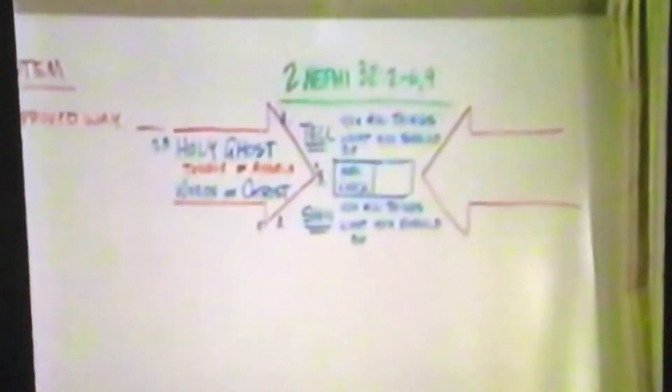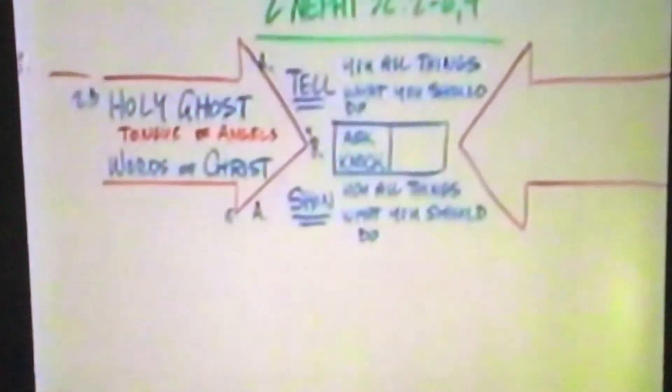All right. Section 107, verse 18 to 19, tells you that you must obtain the keys of the higher or Melchizedek Priesthood so that you can obtain the spiritual blessings of the church. What are those keys? The signs, keywords and penalties as delivered in the true endowment. You are then taught what? The true order of prayer.